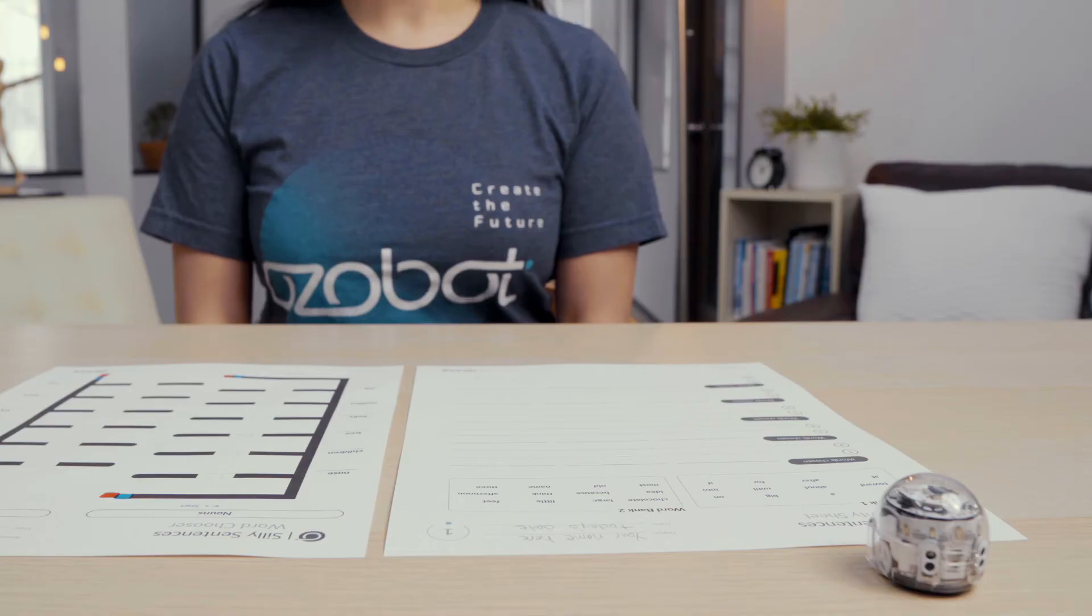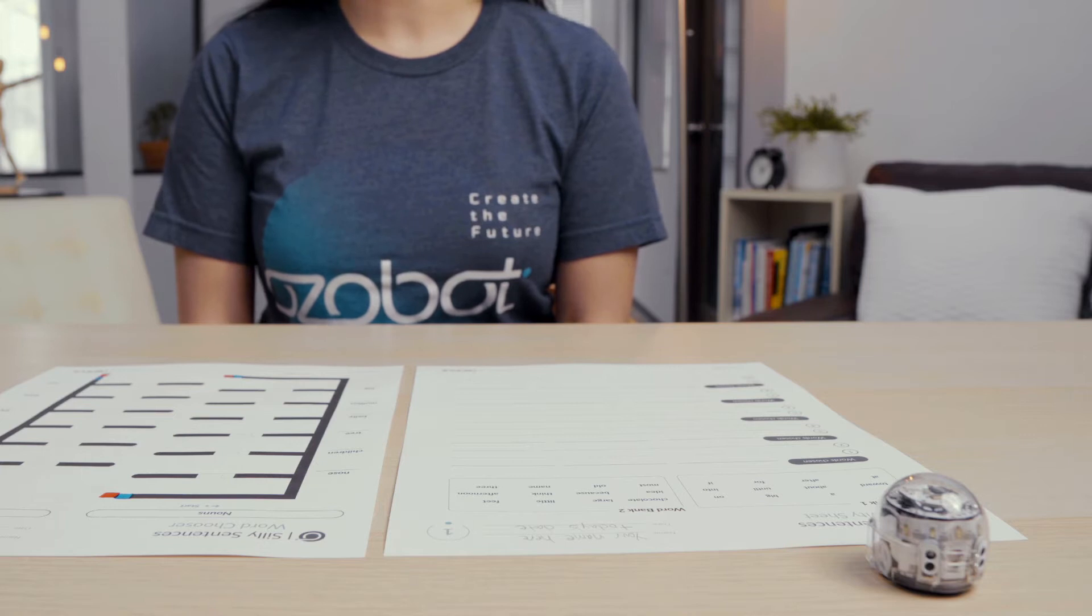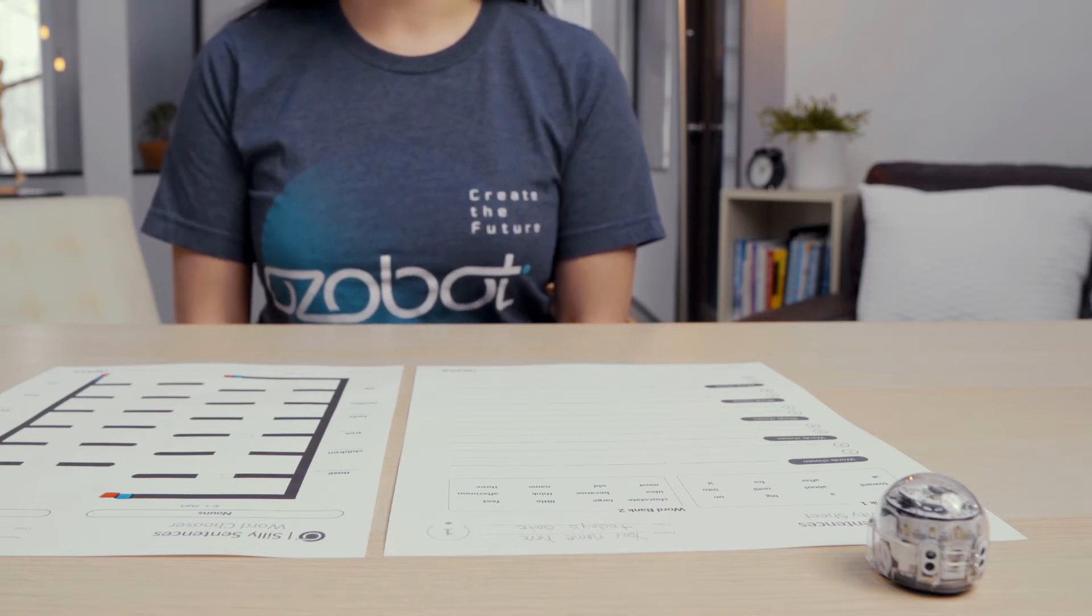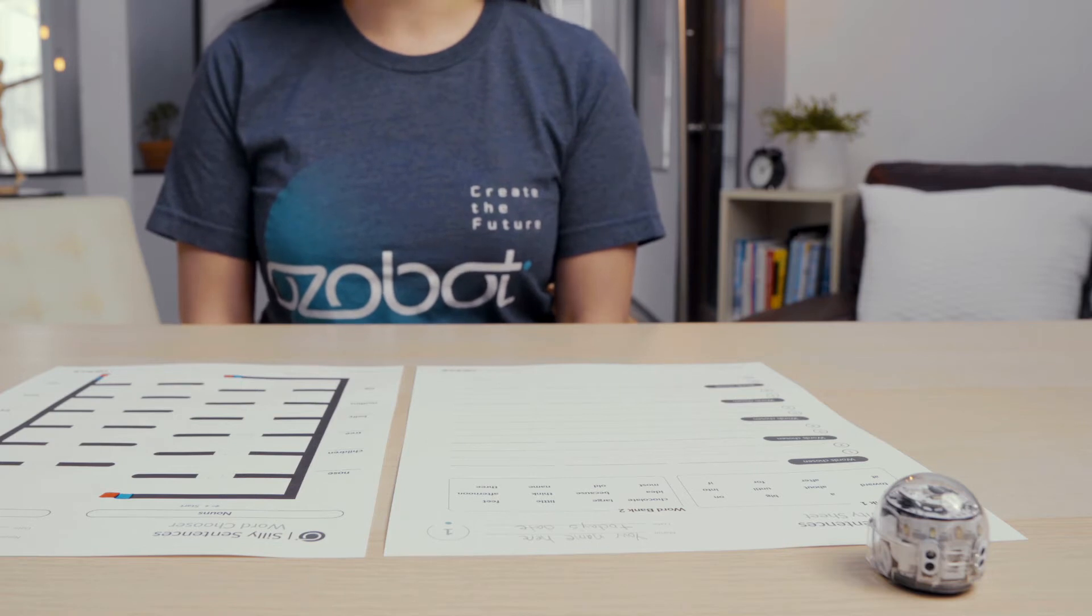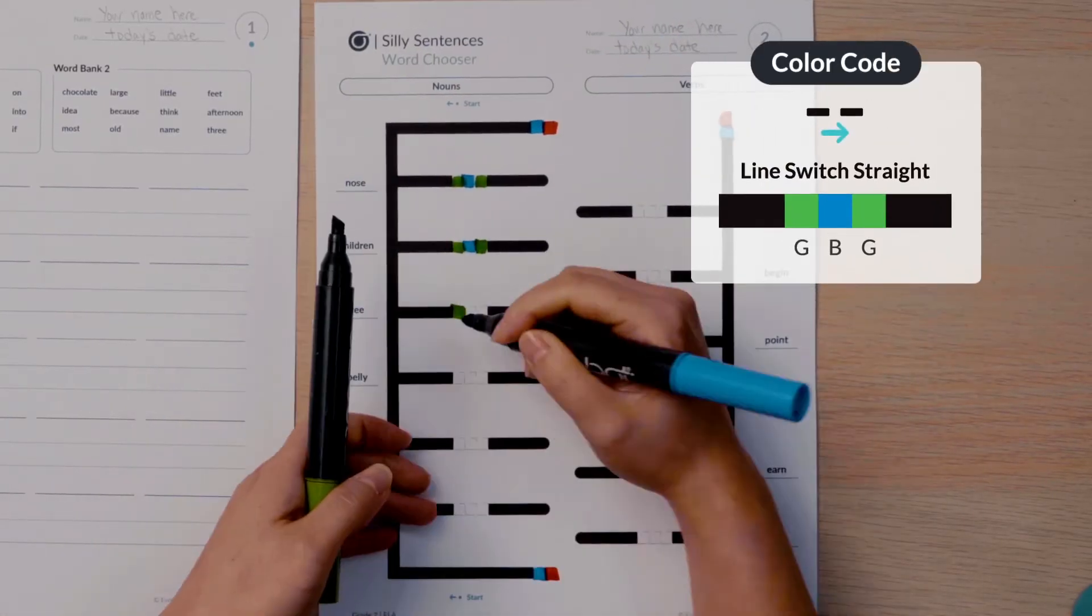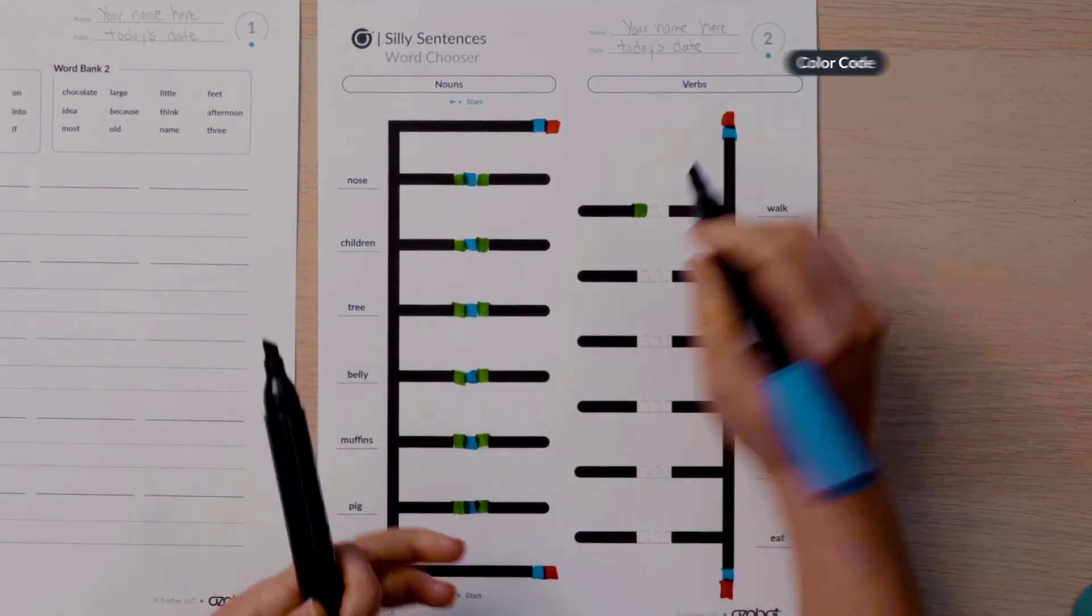Next, the right and left sides of the chooser need to be connected so that Ozobot can help you choose words without having to restart or be moved each time. You'll do this with color codes called line switch codes. Today, you'll use the line switch straight code, which is green, blue, green. This code programs your bot to leave the line it is following and start following the next line it finds.